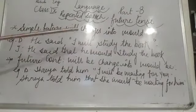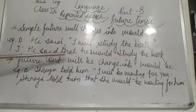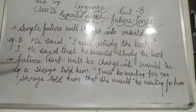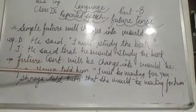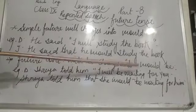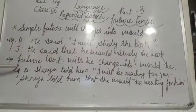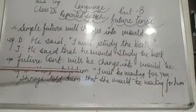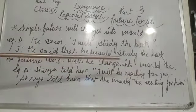Future continuous 'will be' will be changed into 'would be.' Keep this in mind. So let's have one example. Shreya told him, 'I will be waiting for you.' When we form the indirect sentence: Shreya told him that she would be waiting for him.